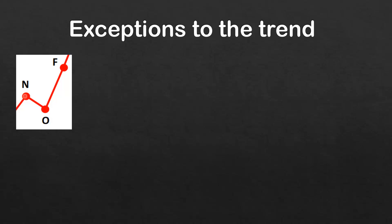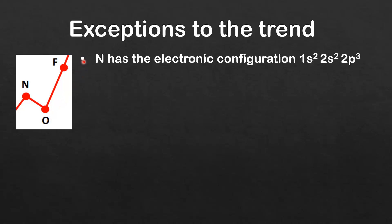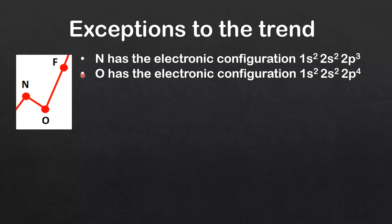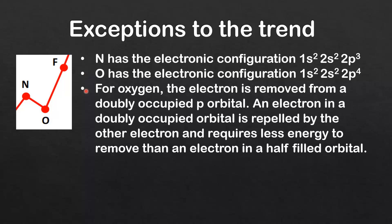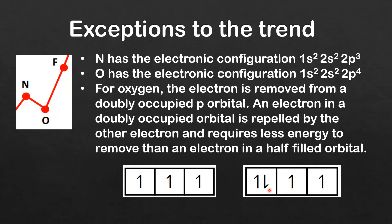Next we look at the reason for the decrease in ionization energy from nitrogen to oxygen. Nitrogen has the electronic configuration 1s² 2s² 2p³. Oxygen has the configuration 1s² 2s² 2p⁴. For oxygen, the electron is removed from a doubly occupied p orbital, and an electron in a doubly occupied orbital is repelled by the other electron and requires less energy to remove than an electron in a half-filled orbital.